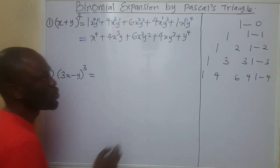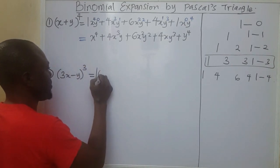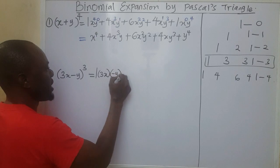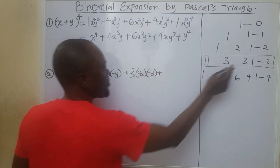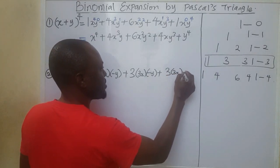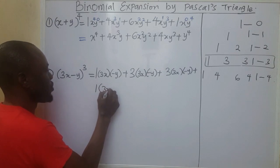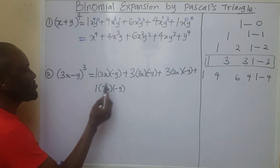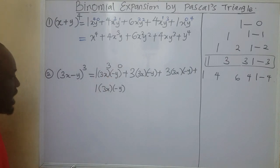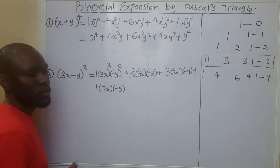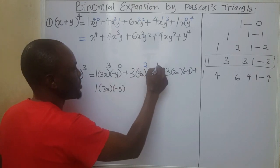Now let's solve the next problem. In the next problem, we're going to take this row because we have the power of 3. So I'm going to start: 1 times bracket 3x minus y, plus 3 times bracket 3x minus y, plus 3 times bracket 3x minus y, plus 1 times bracket 3x minus y. The power of the first will start with 3 and the power of the second will start with 0. As the power of the first decreases, the power of the second increases. This will decrease from 3 to 2 and this will increase from 0 to 1. If I add the powers, I get 3.